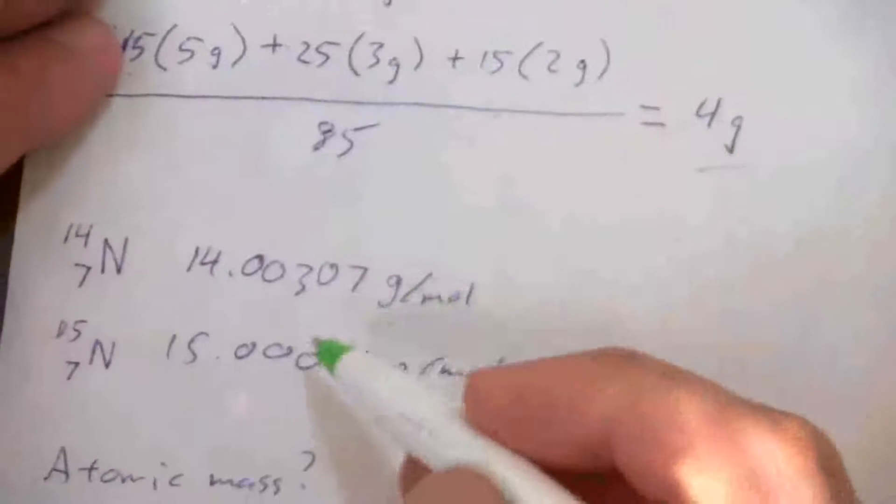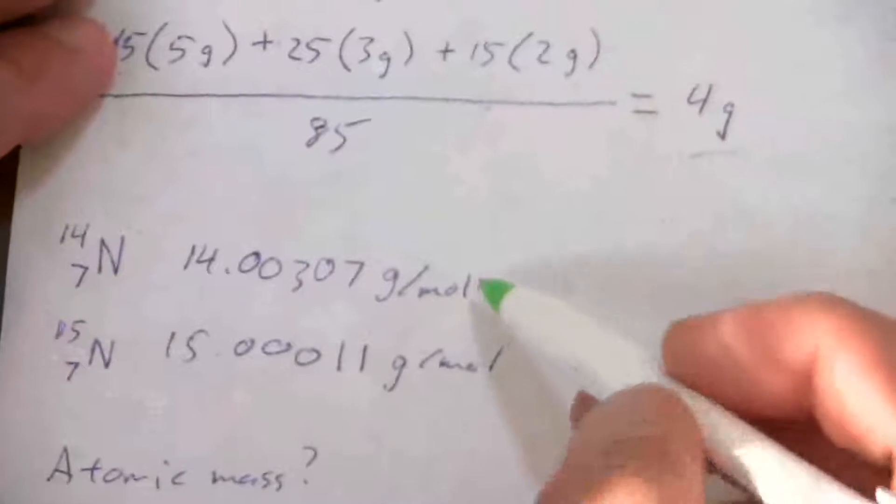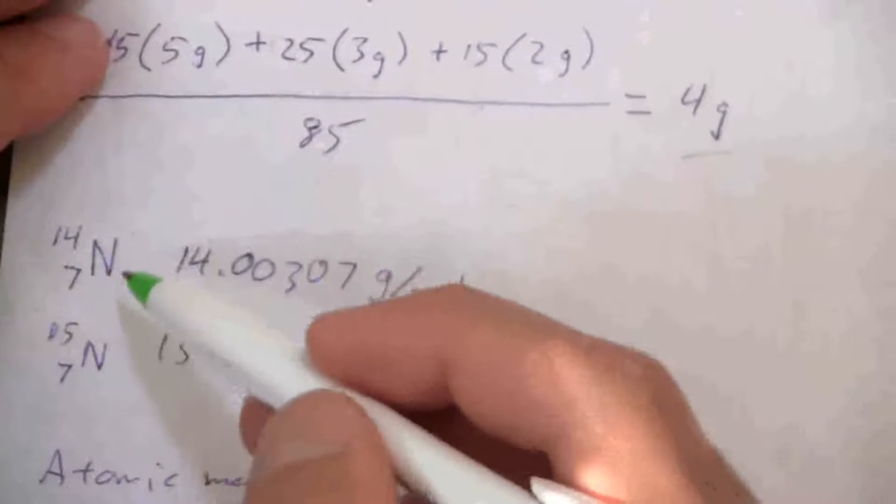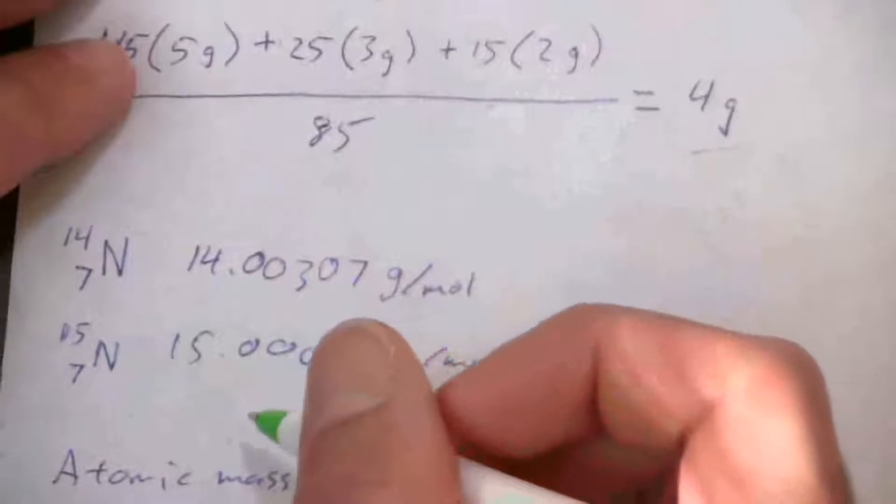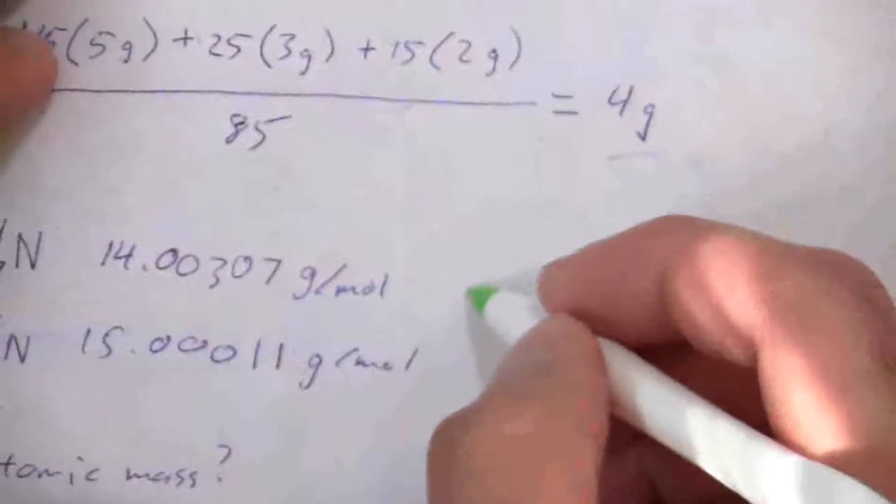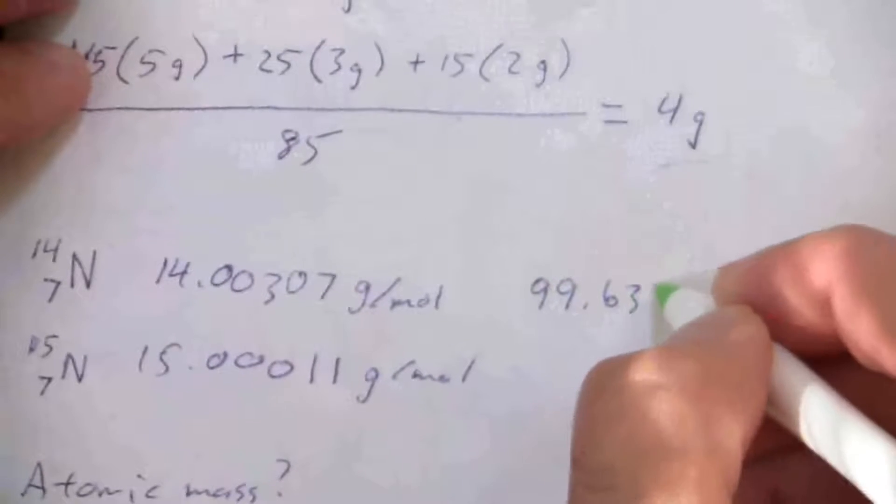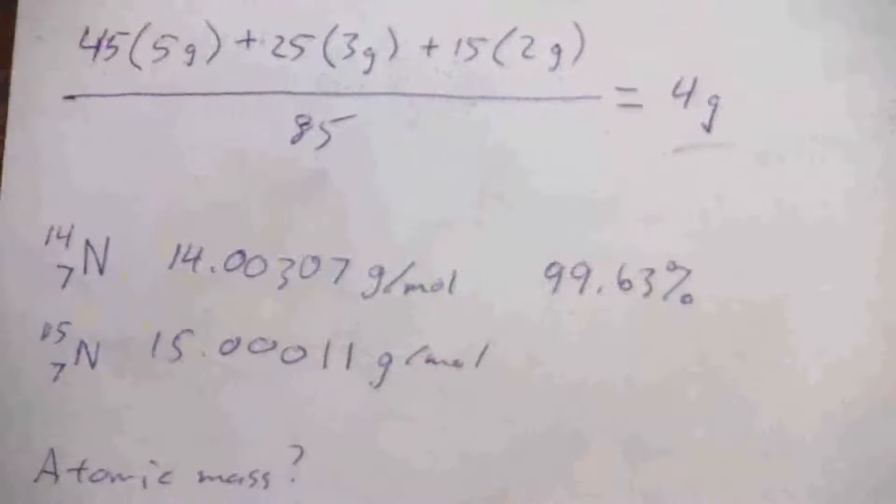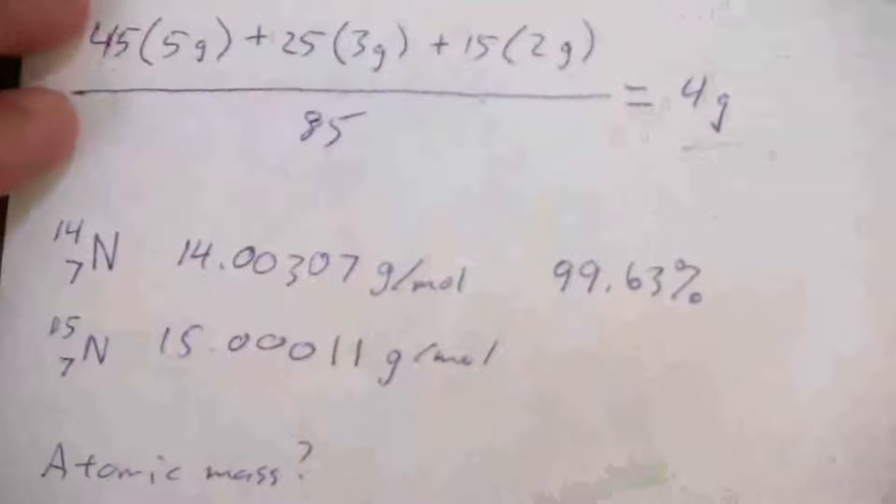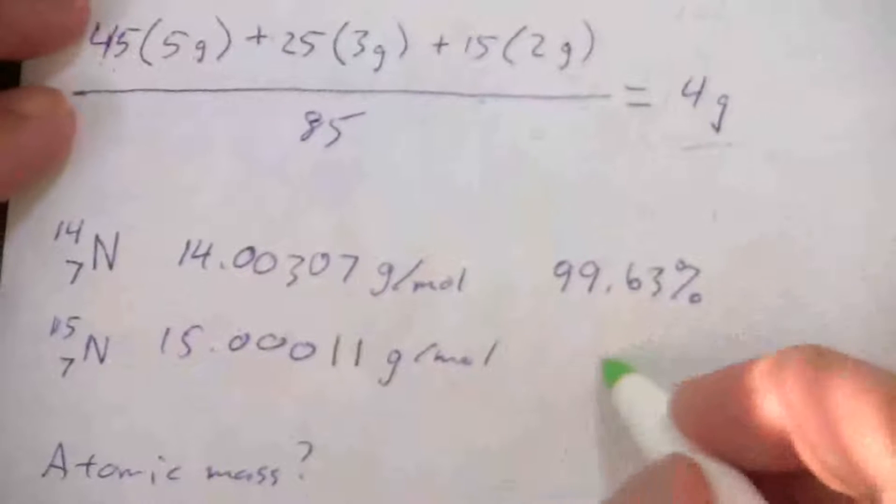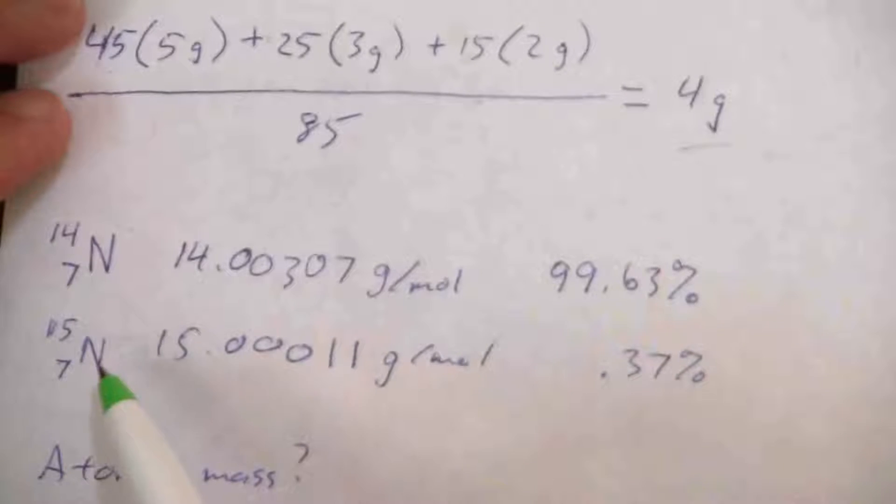And so what we need in chemistry for that is the abundance. In other words, how much nitrogen is nitrogen-14 in nature and how much is nitrogen-15? So I can say that 99.63% of all the nitrogen that occurs in nature is nitrogen-14. The remainder, that last 0.37%, is nitrogen-15.